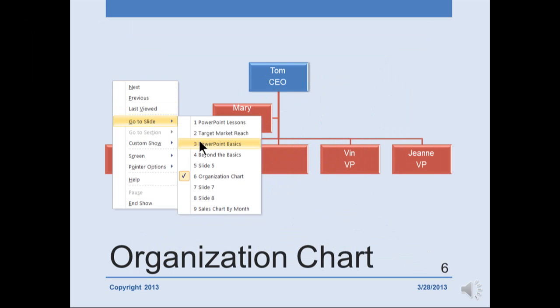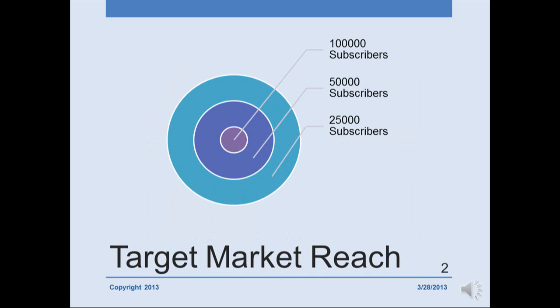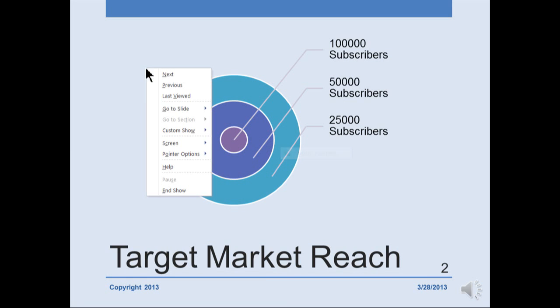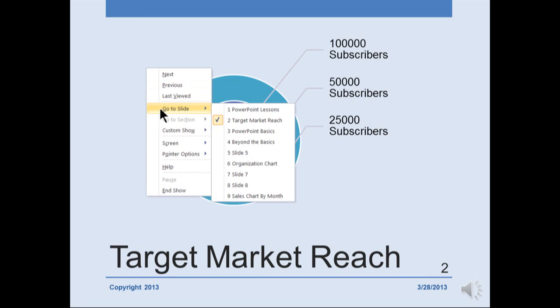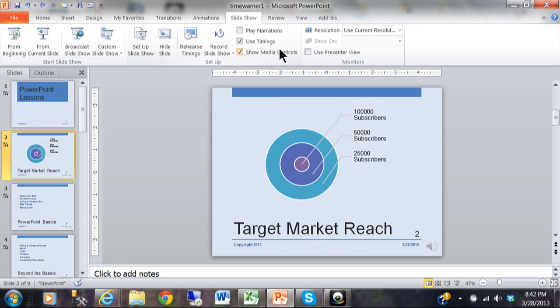For the first method you had to remember what slide number it was so you could type it in. For the second method, you right-click on the slide and the audience can see what you're doing. I'd like to make that more hidden from the audience, and the way we can do that is with an action button.